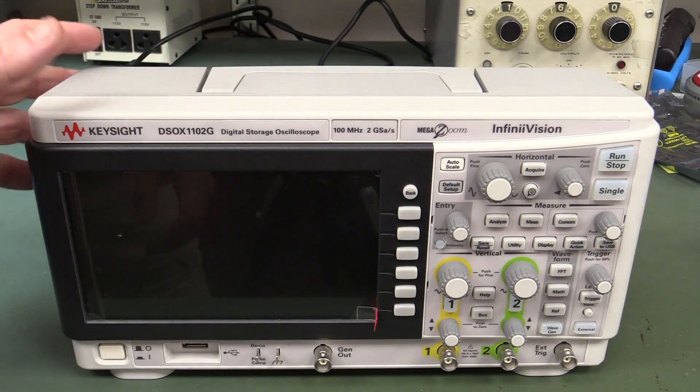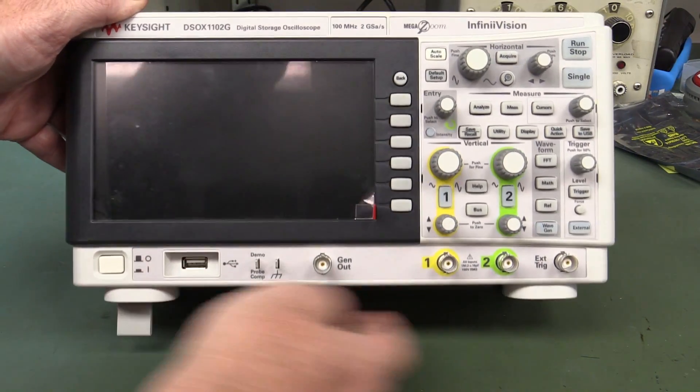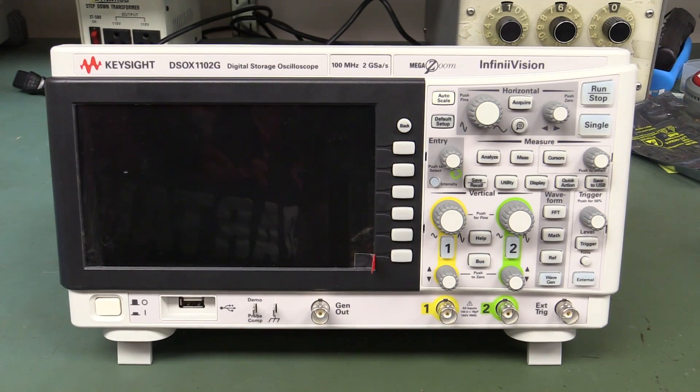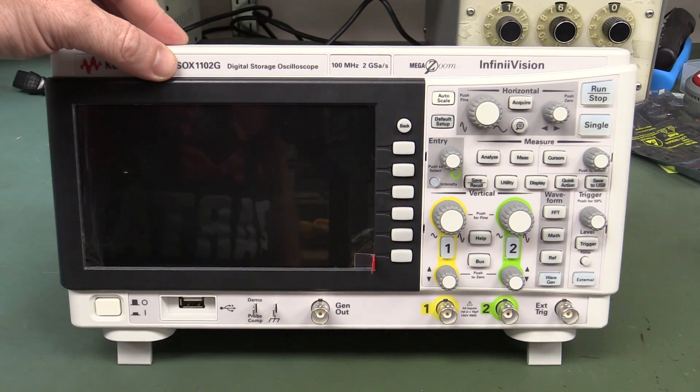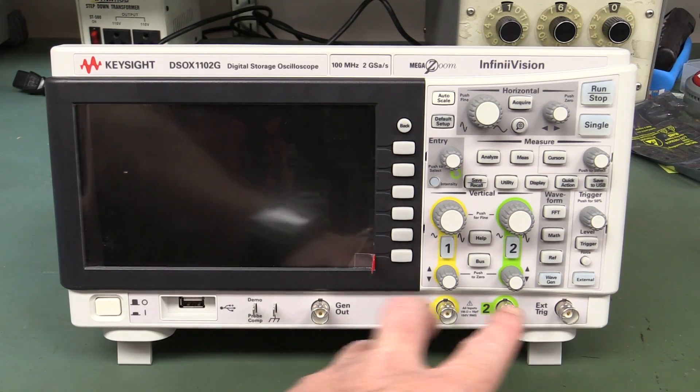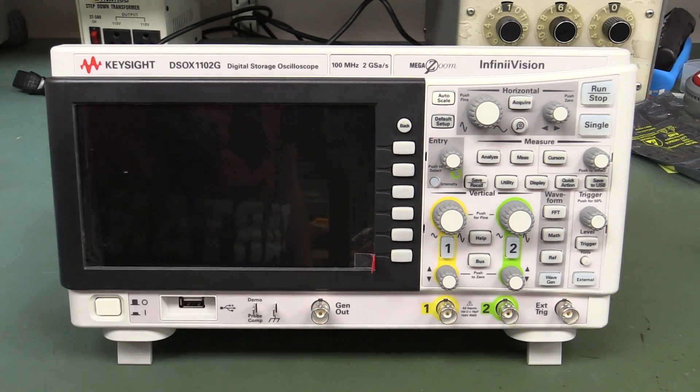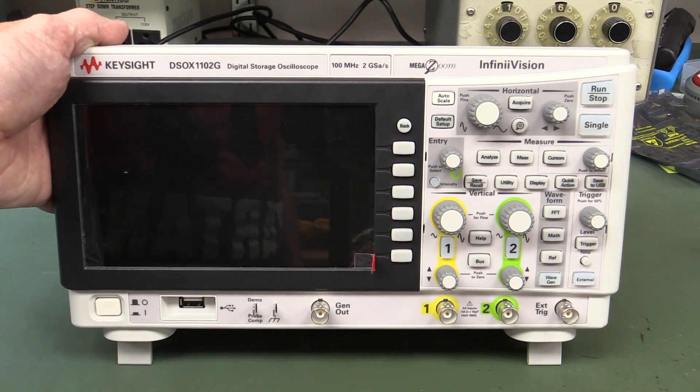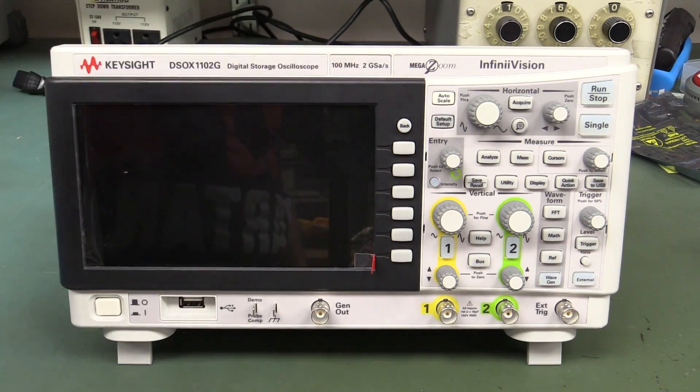Wow, look at this. What are the odds of finding something like this? A brand new series Keysight scope. Wow, the DSO-X1102G. Function generator built-in, two channels. It's no doubt using the MegaZoom 4 ASIC. That's in the 2000 and 3000 series. 100 MHz bandwidth. I think this could be the top of the line model, two gig sample per second. Wonder if it works.